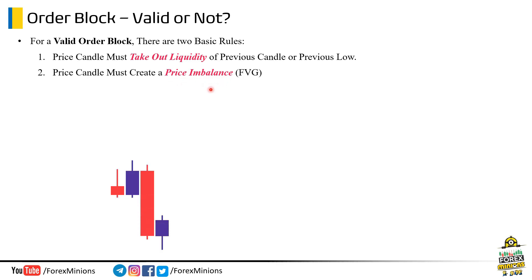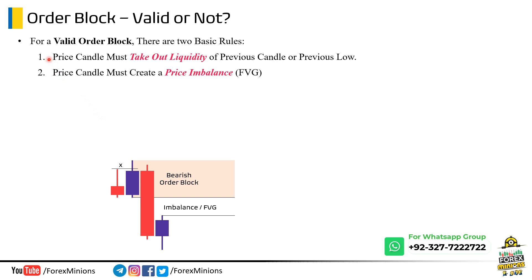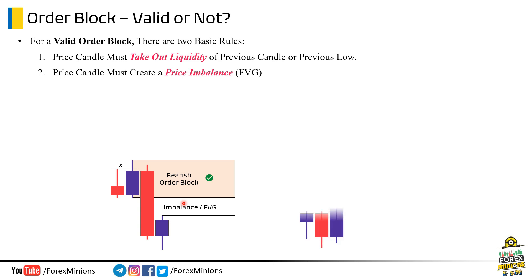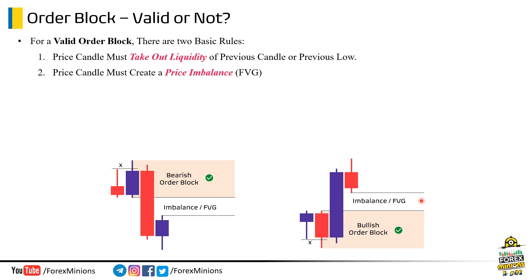Let's understand these rules by a simple example. This is a bearish order block — the last buy candle before a sell move. Applying our rules: this is our highest candle which took out the liquidity of the previous high or previous candle. Secondly, market created this price imbalance — a fair value gap zone. As market followed these two rules, this is a valid order block. Similarly, this is an example of a bullish order block. This candle marked as the order block took out the previous candle's low, and price created this imbalance as well. So this is also a valid order block.